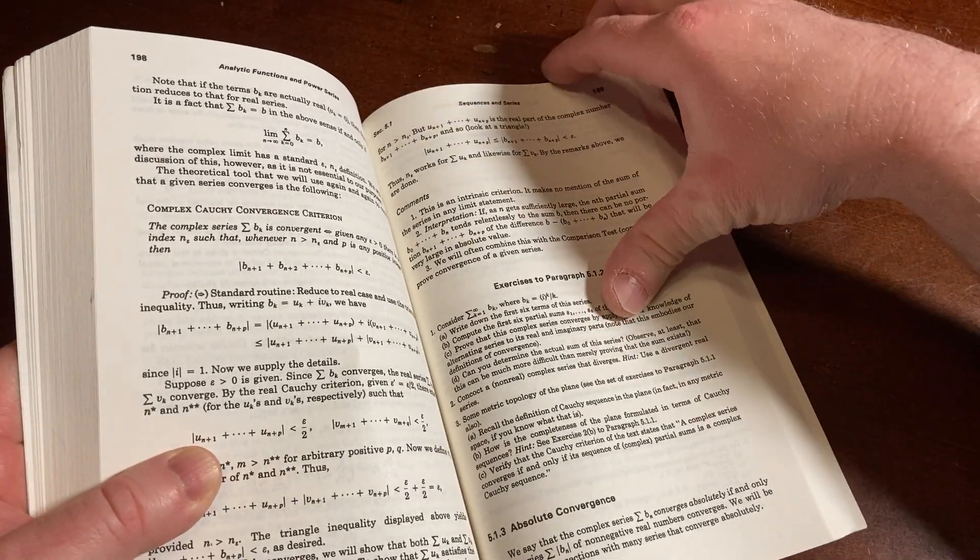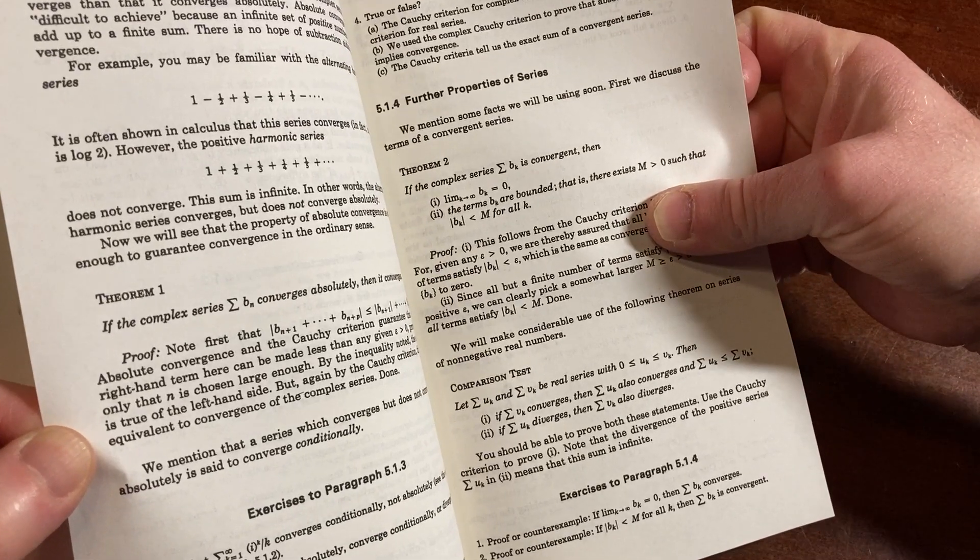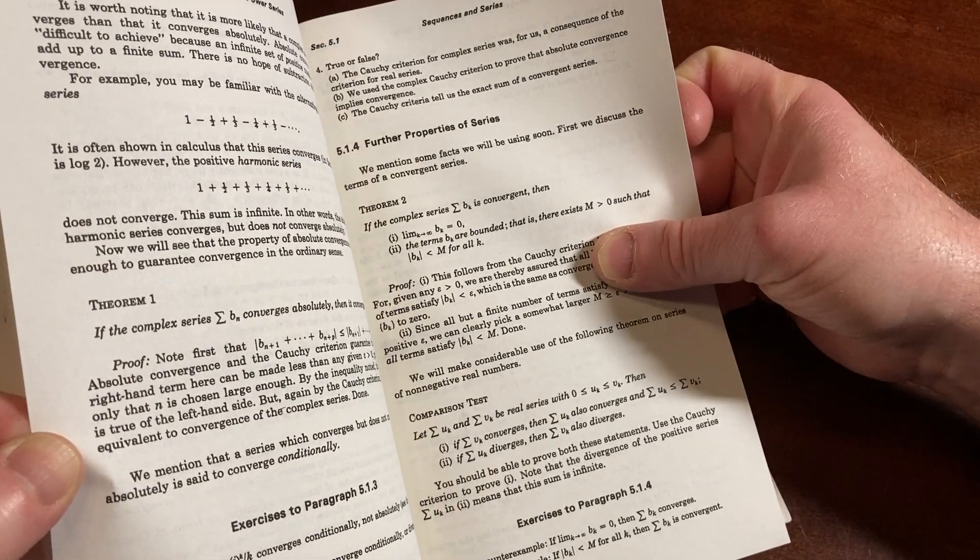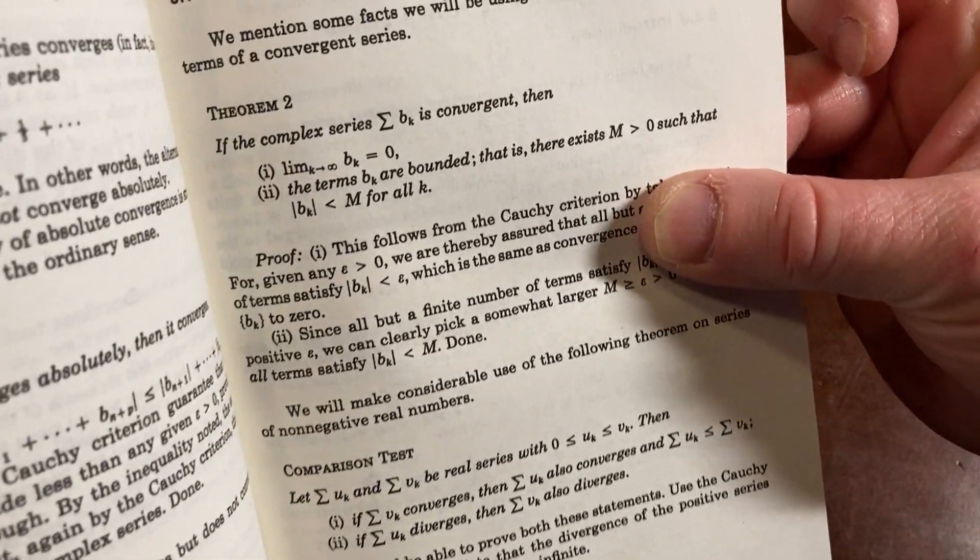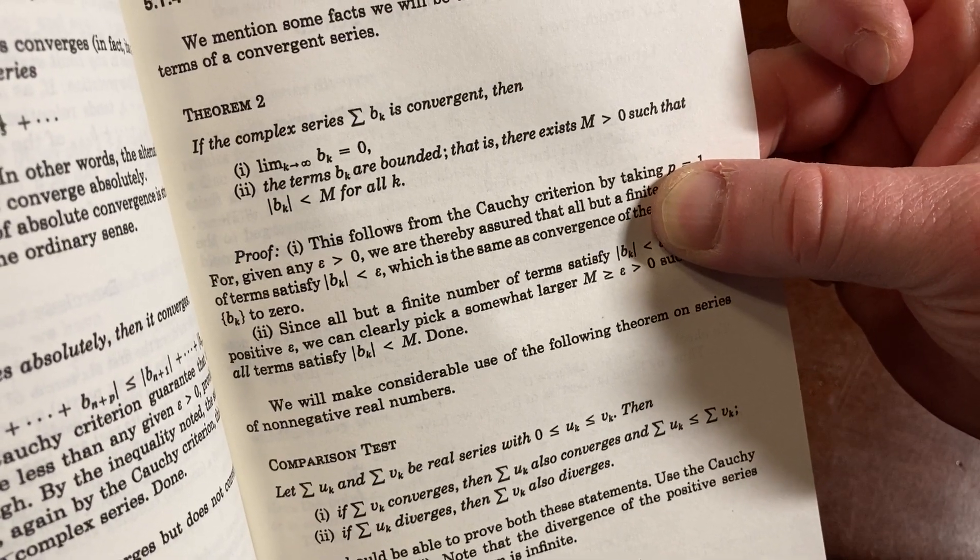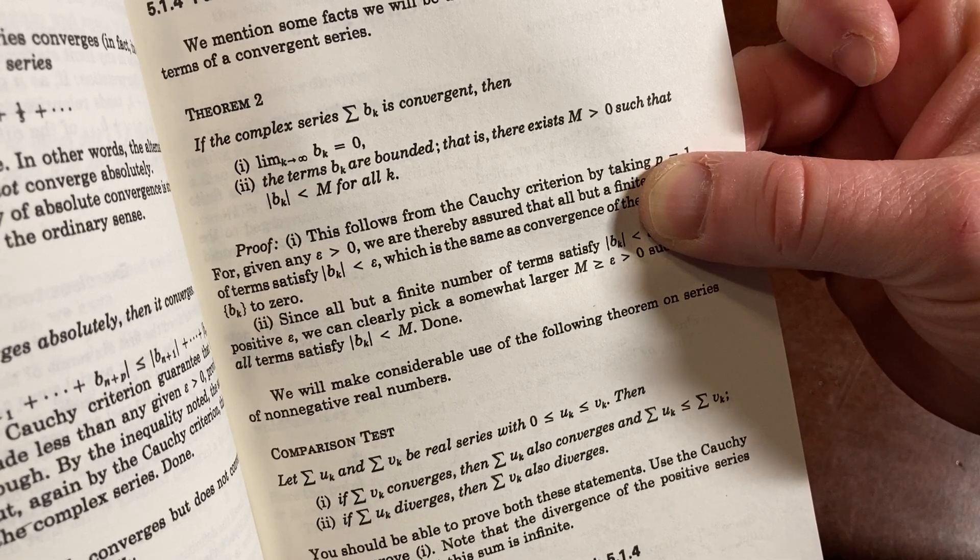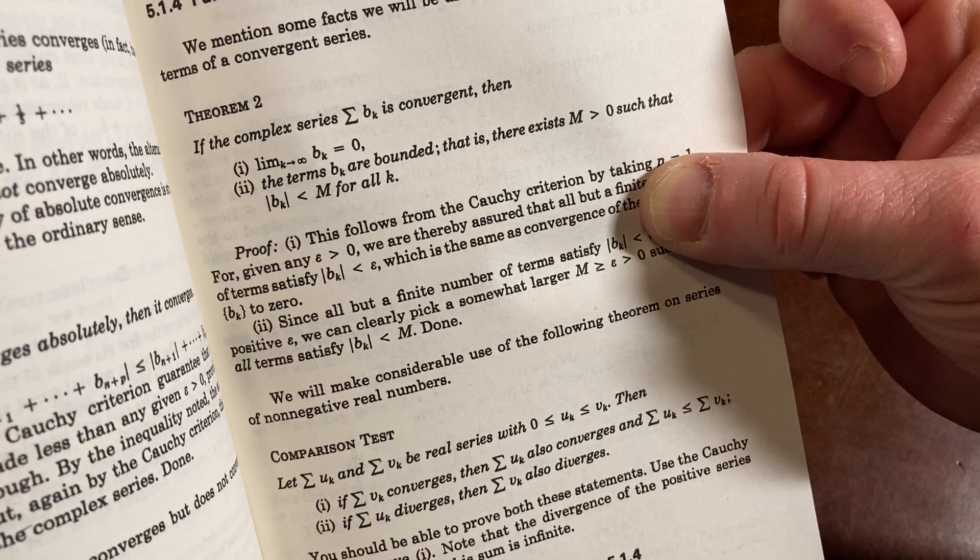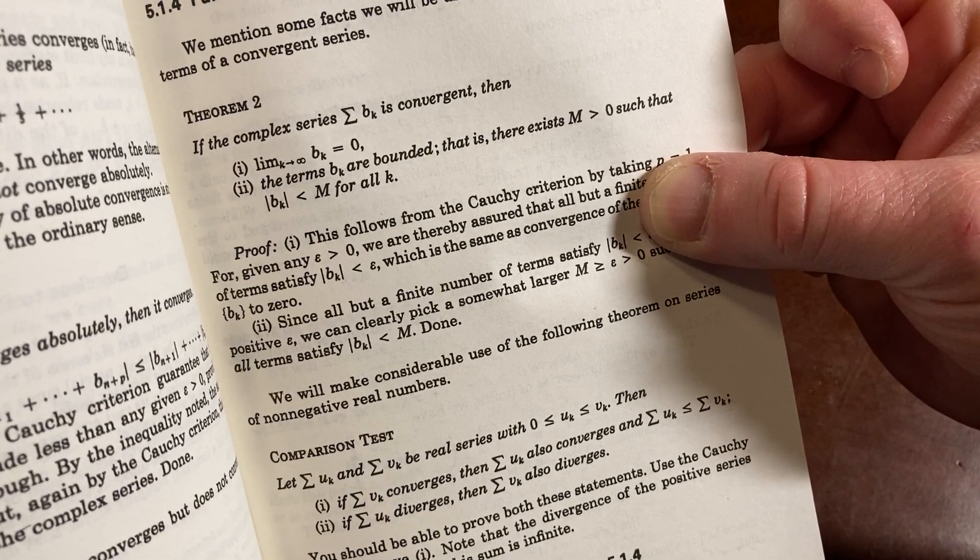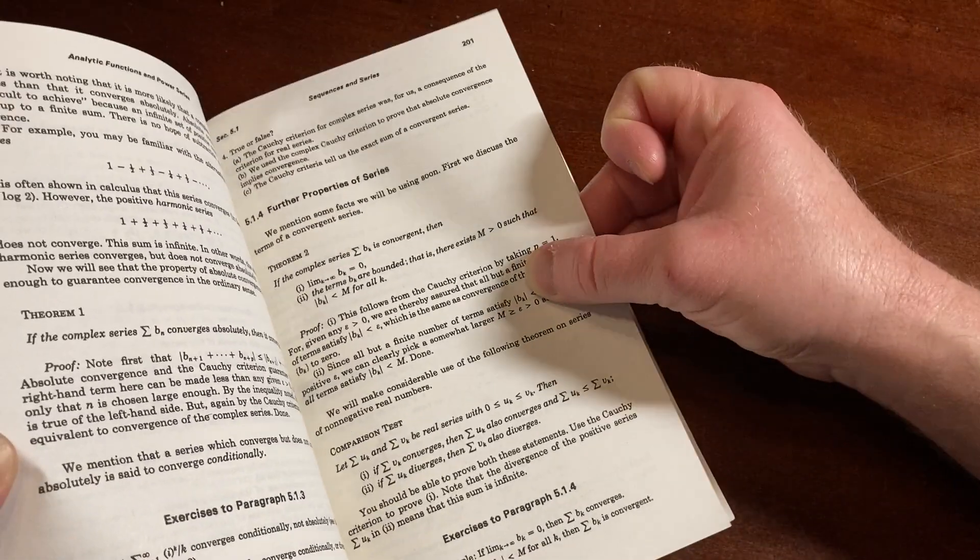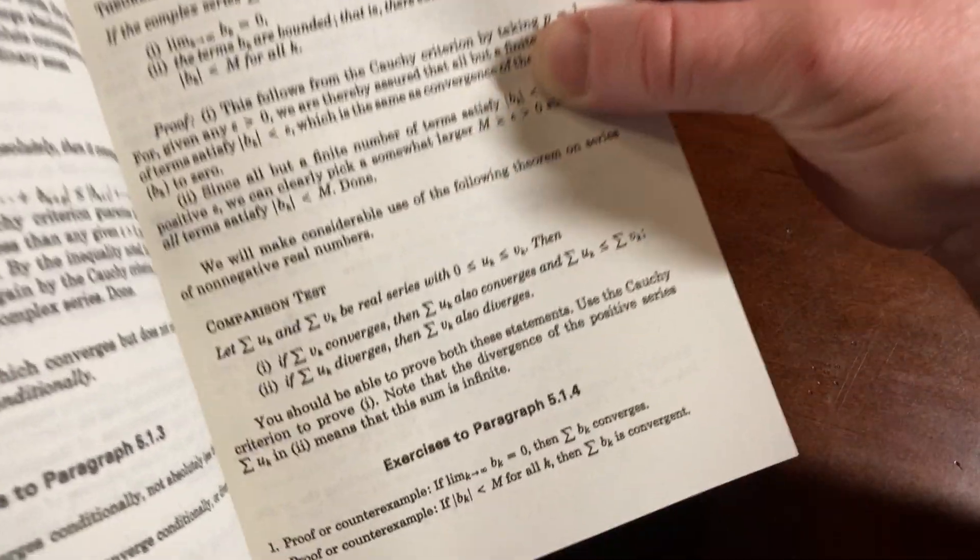They talk about absolute convergence. Here they have a convergence theorem. Here's one, Theorem 2. If it's convergent, then we have that limit is zero, and the terms are bounded. Cool. Comparison test.